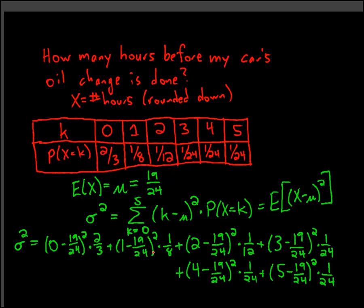So we're finding the expectation of the squares of the differences between the random variable values and the mean. If we compute that out, it ends up being 1,103 over 576, and that's the variance. As a decimal, that's approximately 1.915.